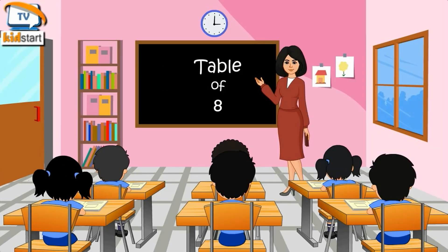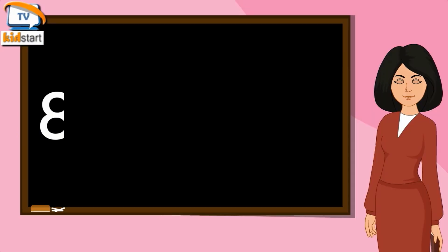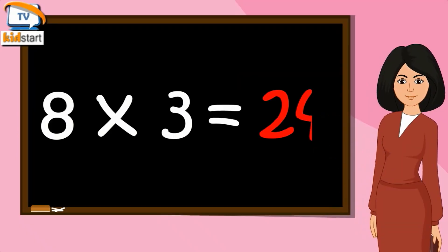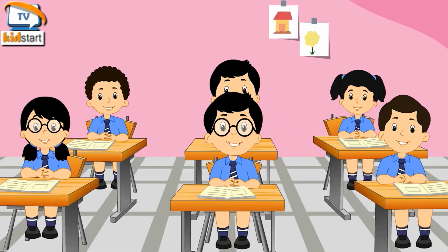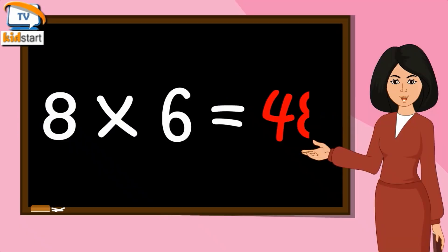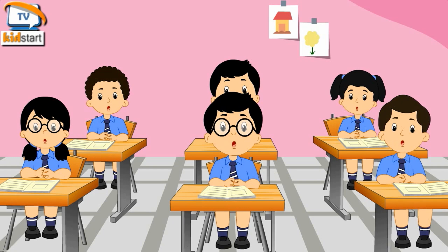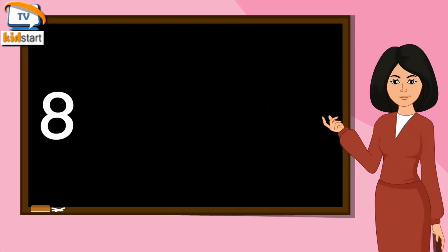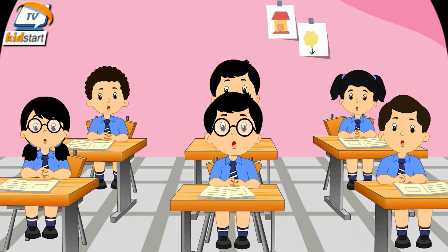Table of Eight. Eight ones are eight. Eight twos are sixteen. Eight threes are twenty-four. Eight fours are thirty-two. Eight fives are forty. Eight sixes are forty-eight. Eight sevens are fifty-six. Eight eights are sixty-four. Eight nines are seventy-two. Eight tens are eighty.